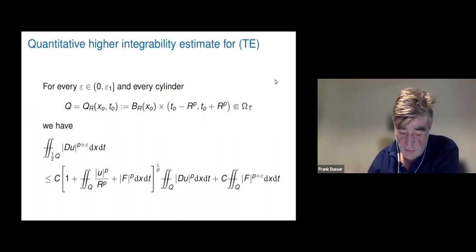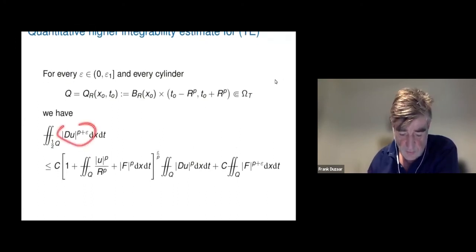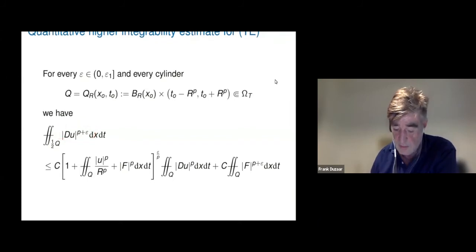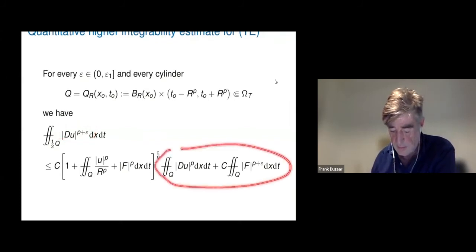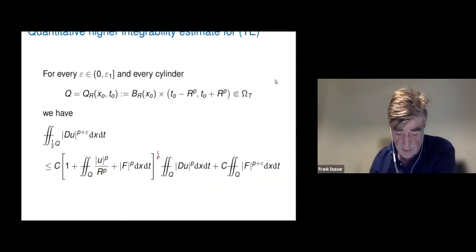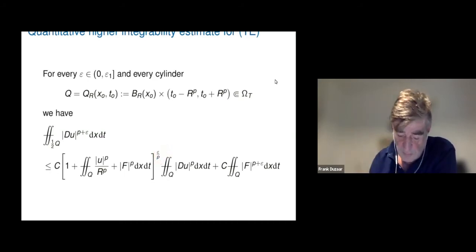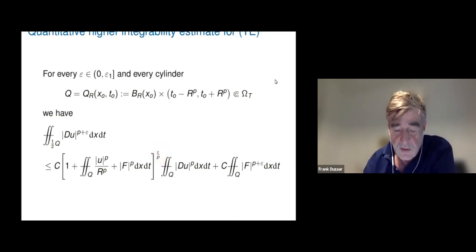The quantitative estimate for the Trudinger equation is: ⨍ |Du|^(p+ε) ≤ C(⨍ |u|^p/r^p + |F|^p + ...)^((p+ε)/p), with exponent ε/p. There is no scaling deficit here because the Trudinger equation is homogeneous.